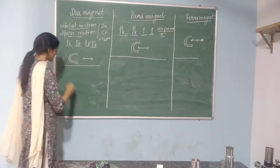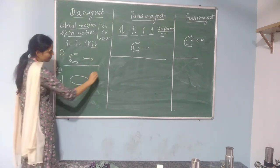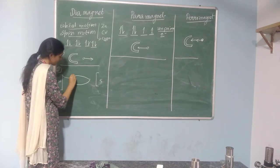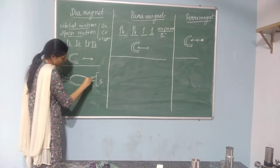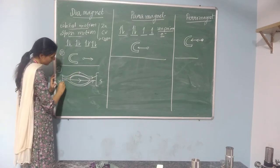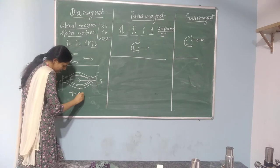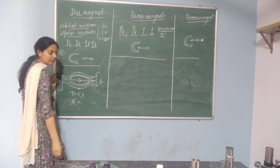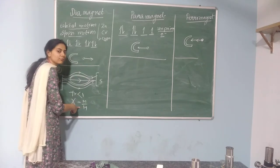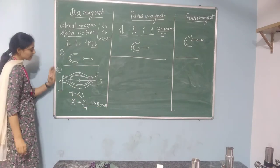If I take a diamagnetic material and apply a magnetic field with north and south poles, many of the magnetic lines of force tend to pass away from the material. Only one or two will pass through the inside, and the rest tend to avoid the material. That is why the magnetic permeability value is less than one, and even the magnetic susceptibility — which is M/H, where M is the magnetization produced and H is the applied magnetic field intensity — is also a small negative value. This is the case for a diamagnetic material.